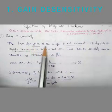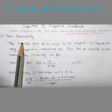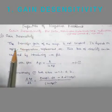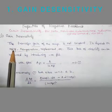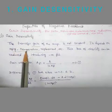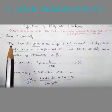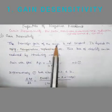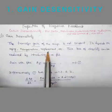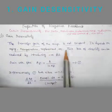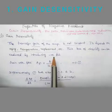We have to achieve a property called desensitivity, so that the transistor's gain does not change due to aging, temperature, replacement, etc. The transfer gain of the amplifier is not constant — it depends on aging, temperature, replacement, etc. This lack of stability can be reduced by introducing negative feedback.